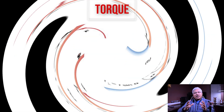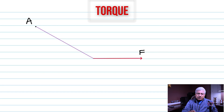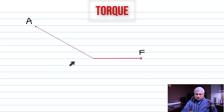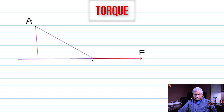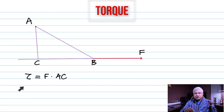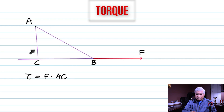Before we do this problem, let's review what torque is. Let's say there's a point A where we're trying to calculate the torque, and F is the force applied. You have to consider the line of action of the force, then multiply the force with the perpendicular distance of the point from the line of action. So the torque — tau is the symbol for torque — would be F multiplied by AC, where AC is that perpendicular distance.